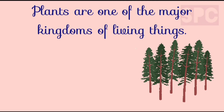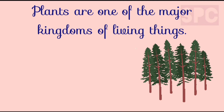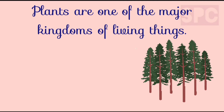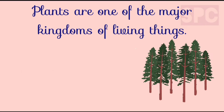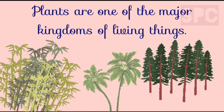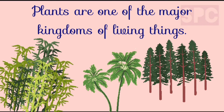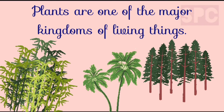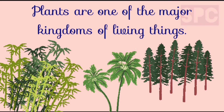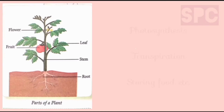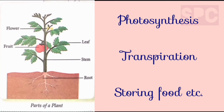Plant Kingdom is one major kingdom in which living beings are classified. There are a huge number of species of plants which fall under this kingdom. They all have the same body parts performing the same functions like photosynthesis, transpiration, storing food, etc.